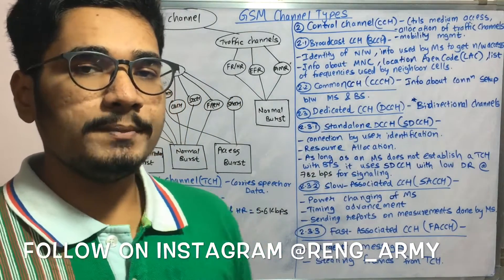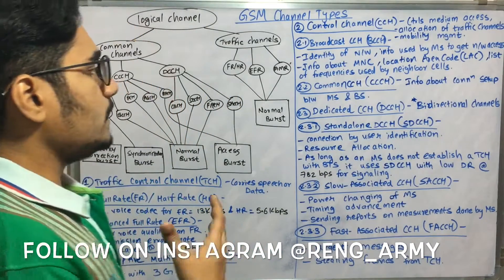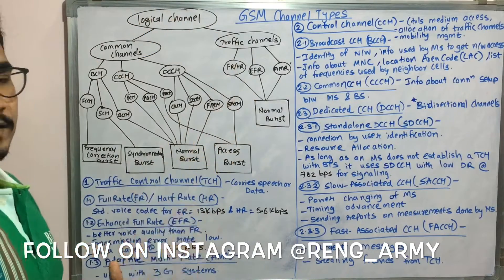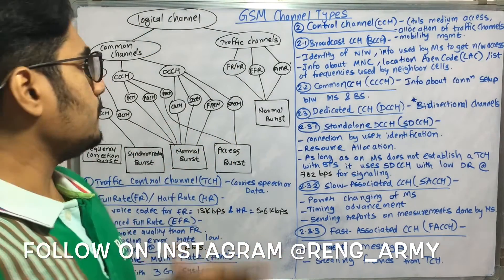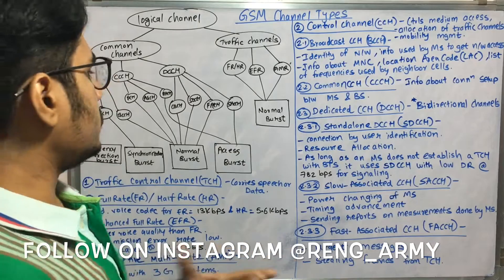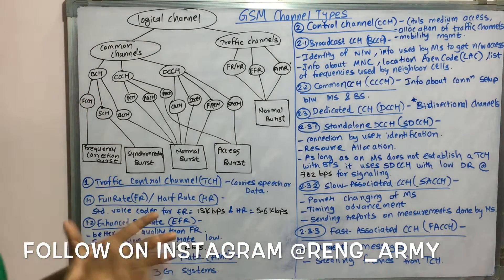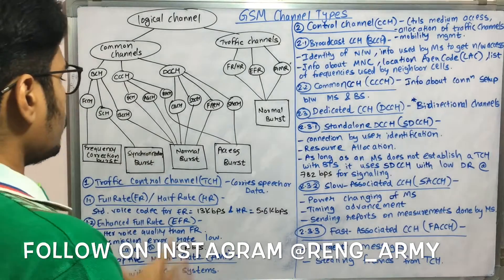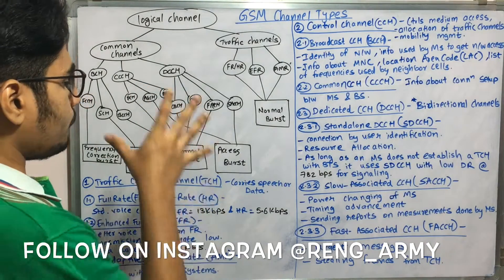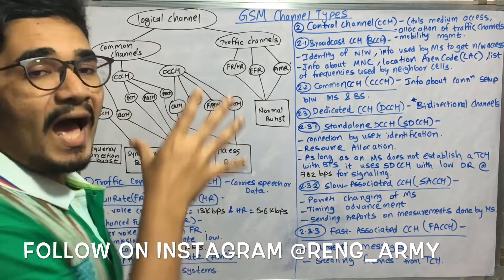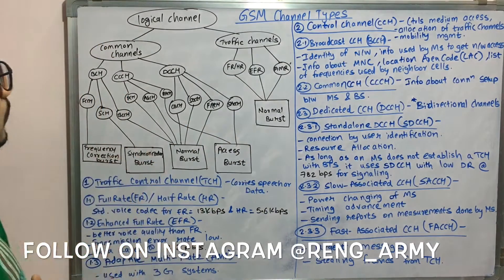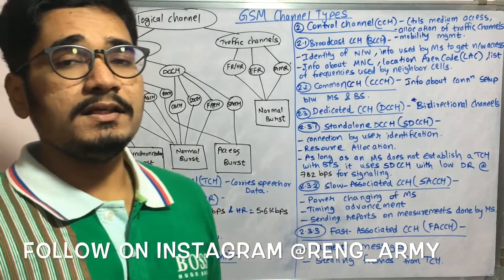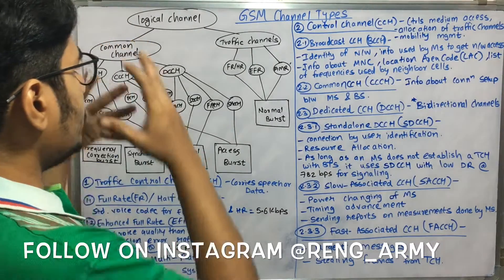We'll be seeing the logical relationship between all the channels and the bursts. There are four different types of burst: frequency correction burst, synchronization burst, normal burst, and access burst. The logical channel carries the main information.